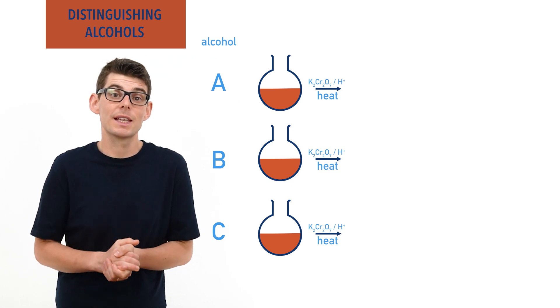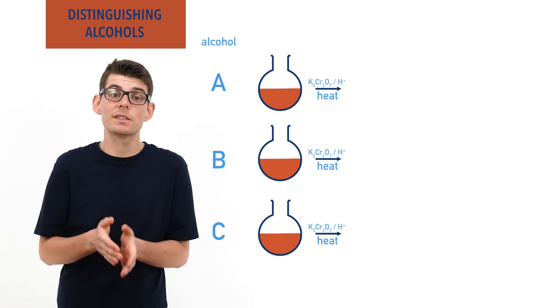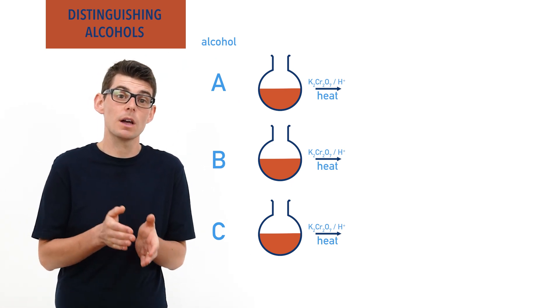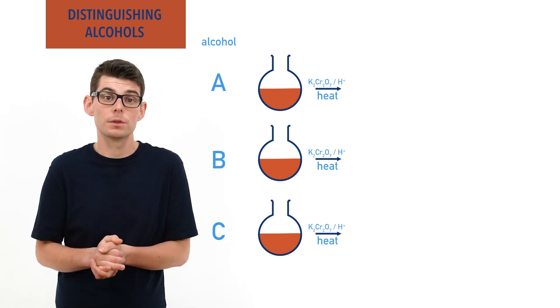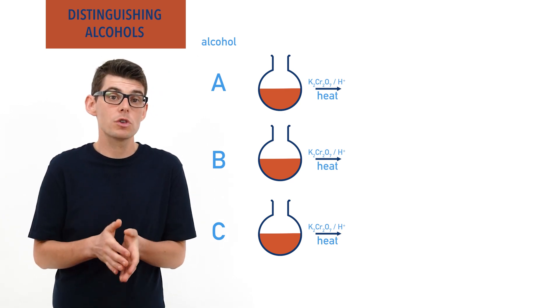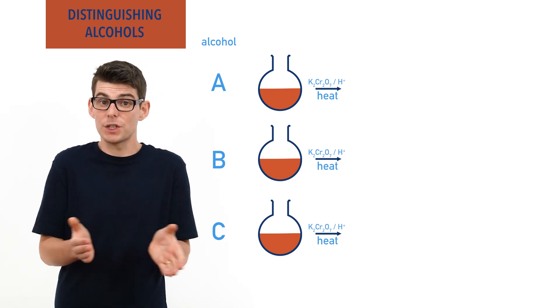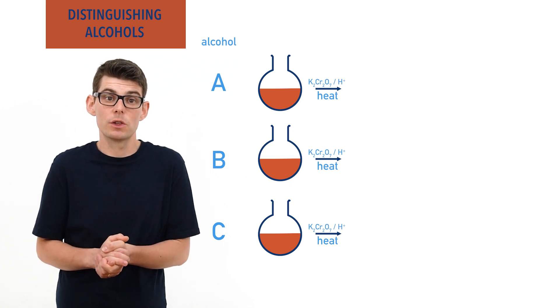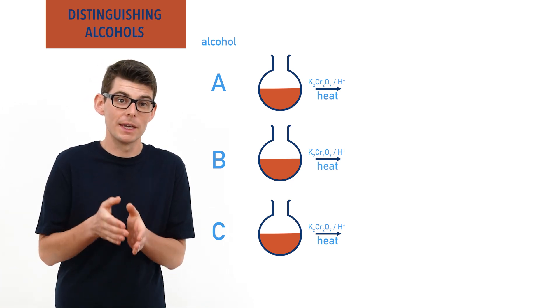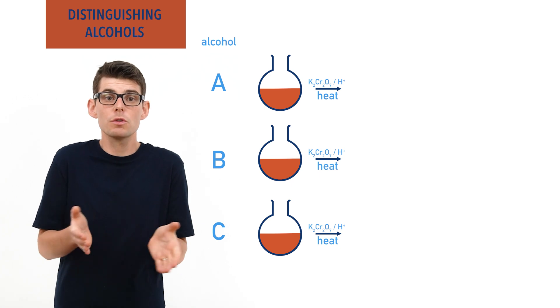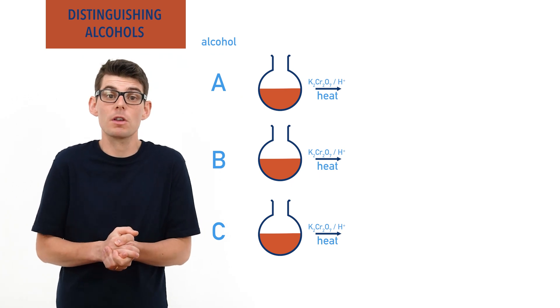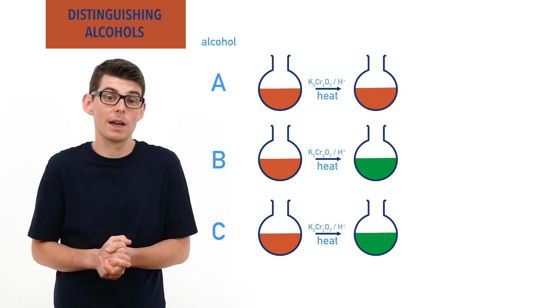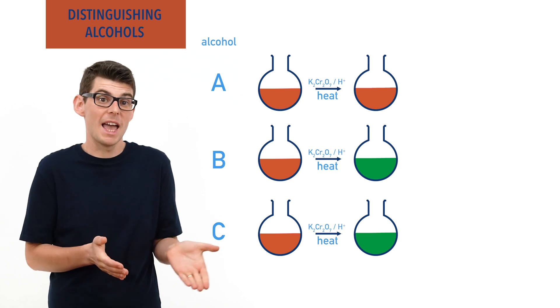The primary and secondary alcohols would be oxidized and therefore the dichromate ions present would be reduced and a color change of orange to green would occur. The tertiary alcohol won't undergo oxidation at all and this means that the solution will remain orange. The solution that remains orange at the end therefore must be the one that contains the tertiary alcohol. In this example, A.